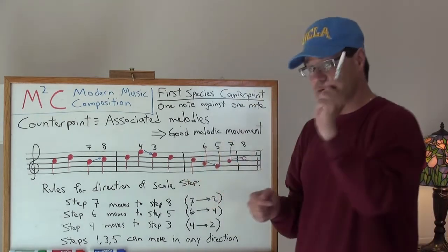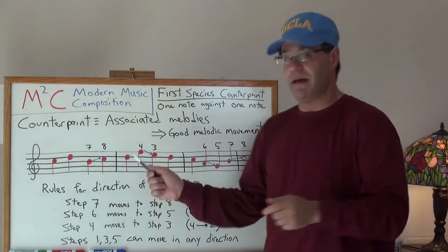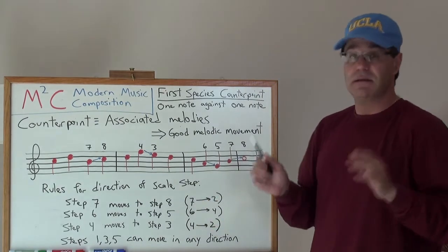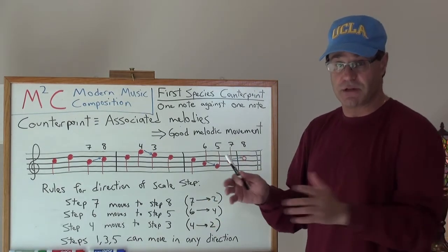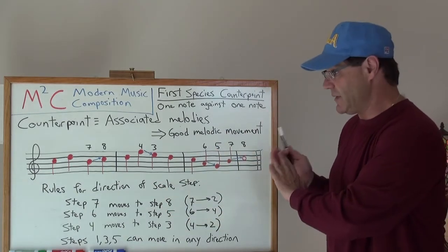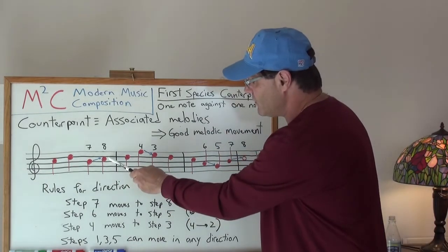So the first rule is step seven, which is the leading tone, moves to step eight. It's a natural progression for the leading tone to move straight into the key that you're in. So we've got B moving to C.